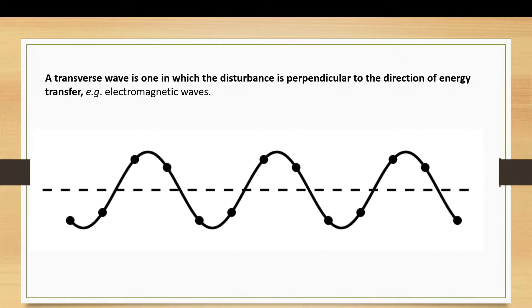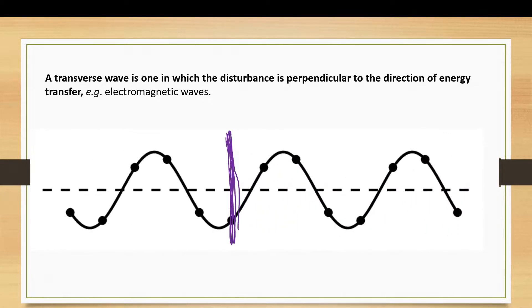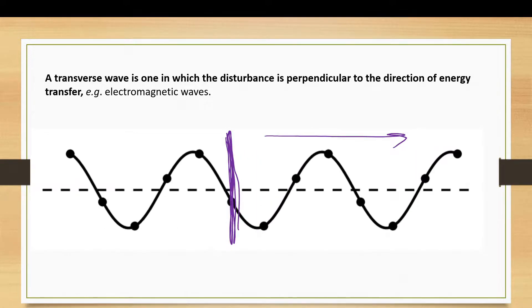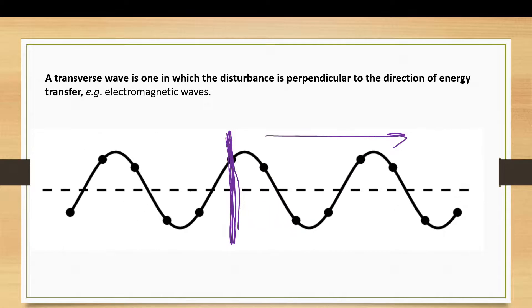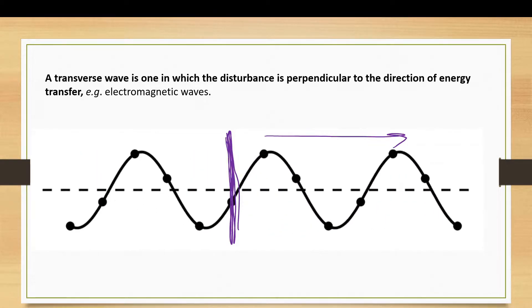If we track one of these dots here, let's watch this one in the center. You can see that this dot is moving up and down perpendicular while the wave moves towards the right. Waves on a string are transverse. All electromagnetic waves are transverse. Some earthquake waves are transverse, the s-waves or secondary waves.